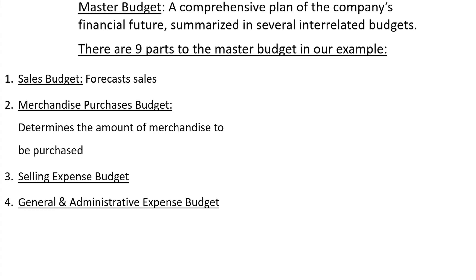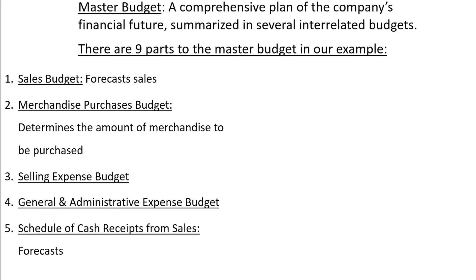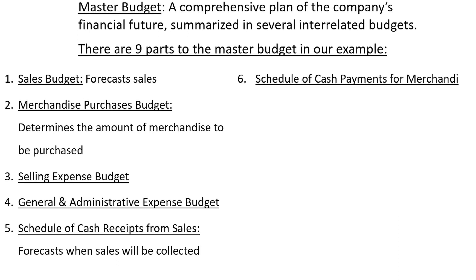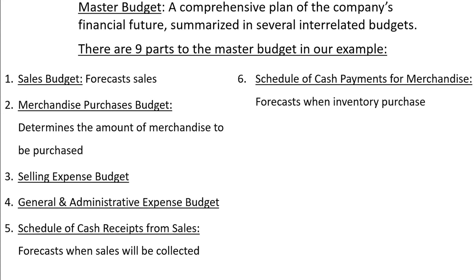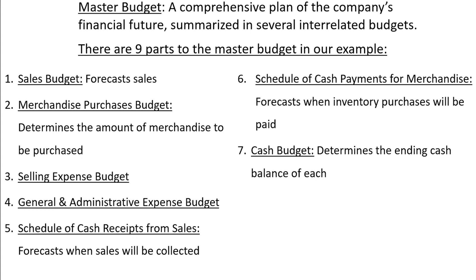Fifth will be a schedule of cash receipts from sales, which will forecast when sales will be collected. Sixth will be a schedule of cash payments for merchandise, which will predict when the inventory purchased from the merchandise purchases budget will be paid. Seventh is the cash budget, which will use information from all previous budgets to determine the cash balance as of the end of each month.